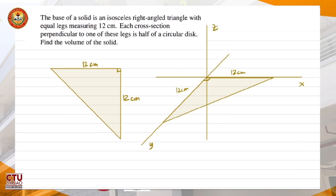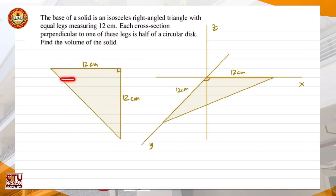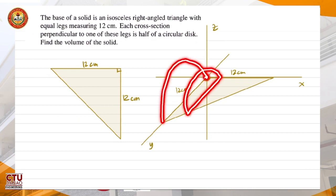According to the problem, each cross-section is perpendicular to one of the legs. If we draw a perpendicular cross-section here, that would be this. Each cross-section is a semicircle. Right here is half of a circular disc with no radius — that is just zero, no cross-sectional area. So the solid resembles half of a cone.